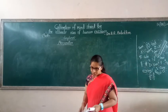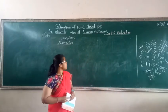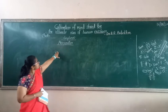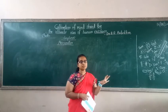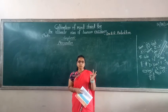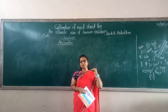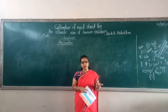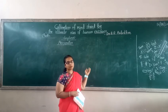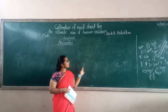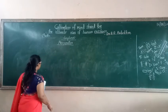Good afternoon children. Welcome back to the next class. In the last class we discussed Chapter 10 of mensuration — the perimeter of rectangle, identifying the perimeter of rectangle, square, and triangle, as well as the area of square, triangle, and equilateral triangle. Today let's solve some problems regarding the perimeter of rectangle.